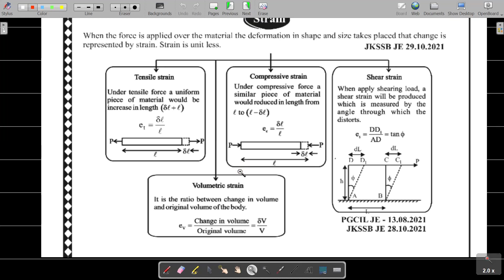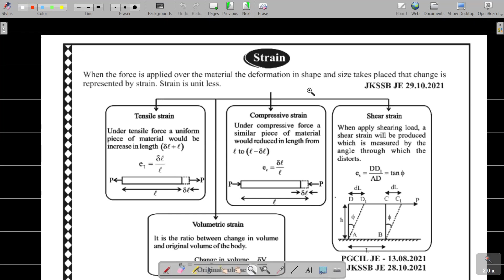Strain is basically deformation. When force is applied over the material, the material may deform in shape and size. Strain is unitless because it is a ratio of change in dimension with respect to the original dimension.